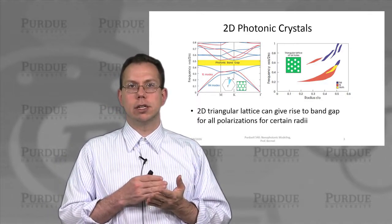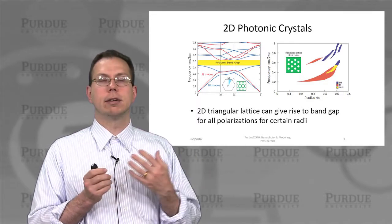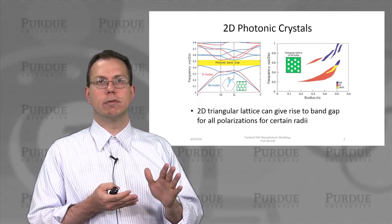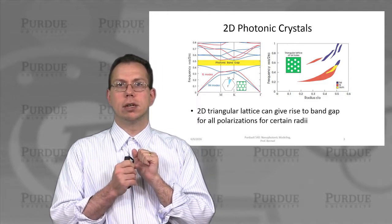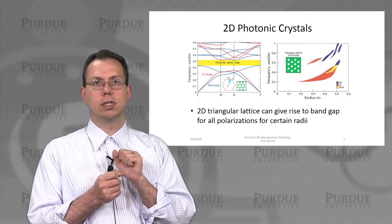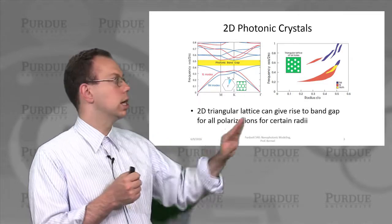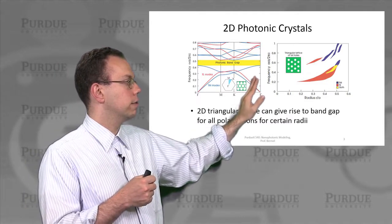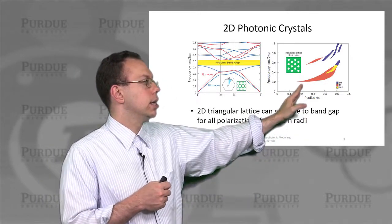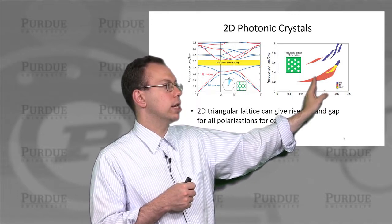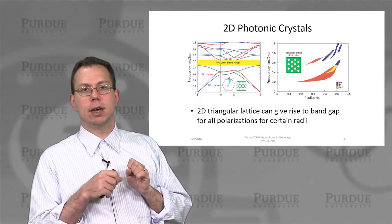Starting with 2D structures — the first real innovations in photonic crystals, given that 1D periodic structures have been known for more than a century — we find potentially photonic bandgaps in both transverse electric and transverse magnetic polarizations, corresponding to the E-field or H-field being in the plane. In particular, a triangular lattice of holes punched into a high-index medium yields significant bandgaps that can be tuned based on the hole radius, for both TE and TM simultaneously.